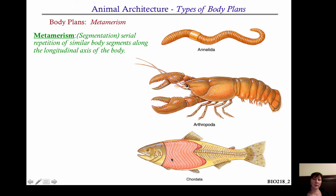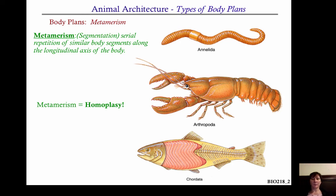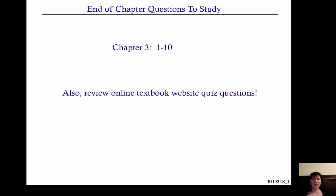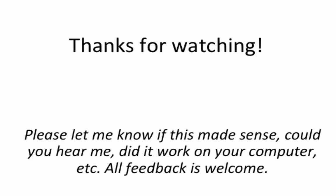In this particular stylized fish, you see muscle compartments that are serially repeated. Metamerism is a characteristic that is homoplastic — you see it cropping up several different times in the animal world, and there's a consequence to this which we'll talk about as we go along. That wraps up the animal architecture. Thanks for watching, and I hope this video was helpful to you.